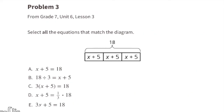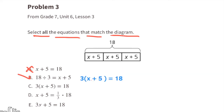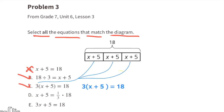Problem number three from 7th grade Unit 6 Lesson 3: select all the equations that match the diagram. Look closely at the diagram — you have three groups of x plus 5, and that all equals 18. Since equation a only has one group of x plus 5 equaling 18, it doesn't match. Equation b works: 18 divided by three groups equals x plus 5 inside each group. Equation c also works: 3 times x plus 5 equals 18, meaning three groups of x plus 5 equals 18.